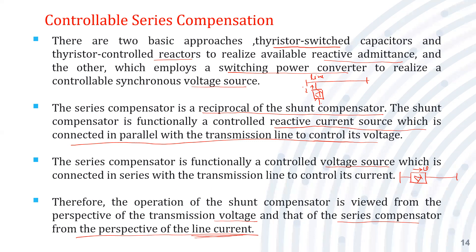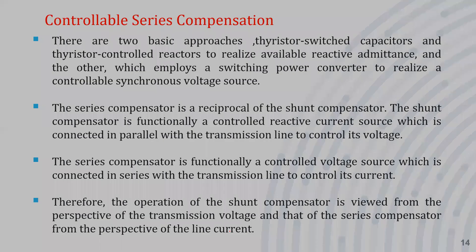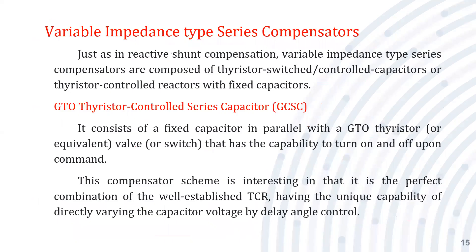The operation of the shunt compensator is viewed from the perspective of transmission voltage, while the series compensator is viewed from the perspective of line current. Controlling the line current allows the power handling capacity of the transmission line to be increased very effectively compared to shunt compensation. There are two types of series compensators: the switching converter type and the variable impedance type.